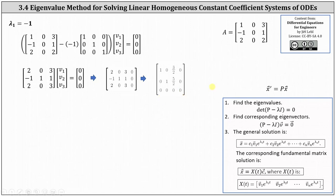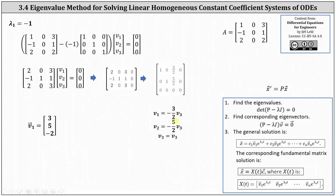Writing the equations as V one equals negative three halves V three, V two equals negative five halves V three, and V three equals V three. To avoid fractions, let V three equal negative two. Then V one equals three and V two equals five, giving us the corresponding eigenvector of three, five, negative two.